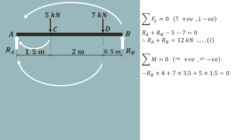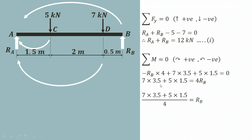The 7 kN force produces a clockwise moment about A; its distance from A is 3.5 meter, so it is 7 multiplied by 3.5. The 5 kN point load also produces a clockwise moment about A with perpendicular distance 1.5 meter, so it is 5 into 1.5, and the summation equals zero. Solving: RB equals 7 into 3.5 plus 5 into 1.5, all divided by 4, which is 32 divided by 4, giving RB equals 8 kN.